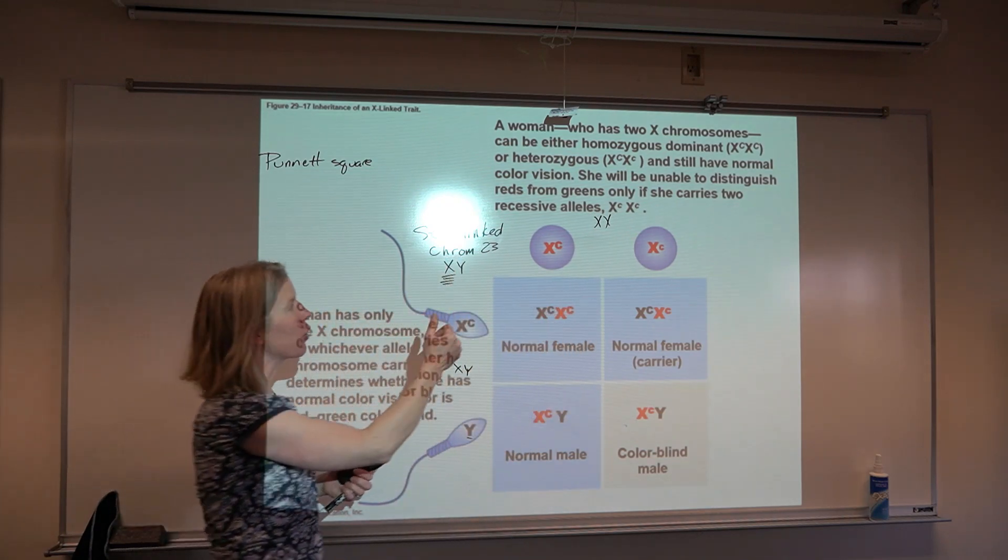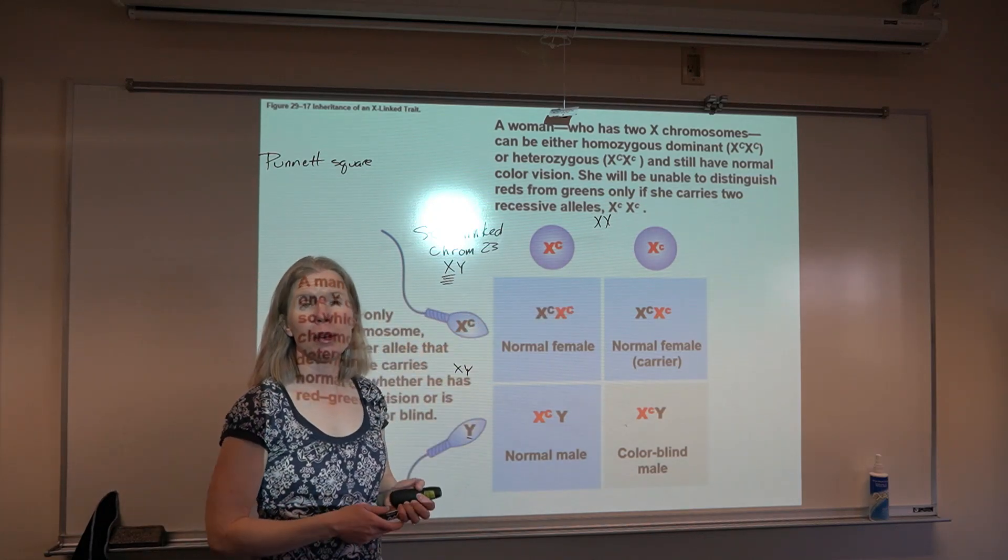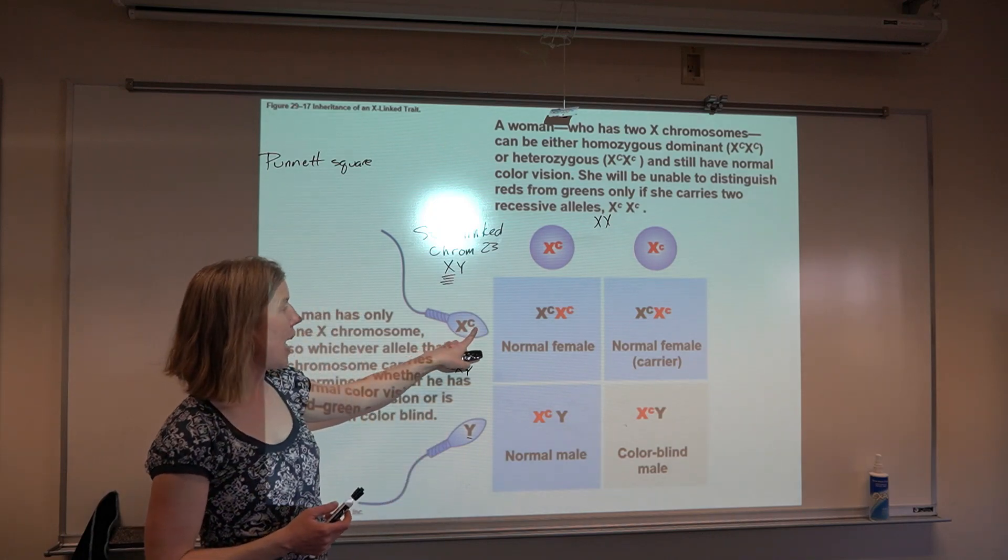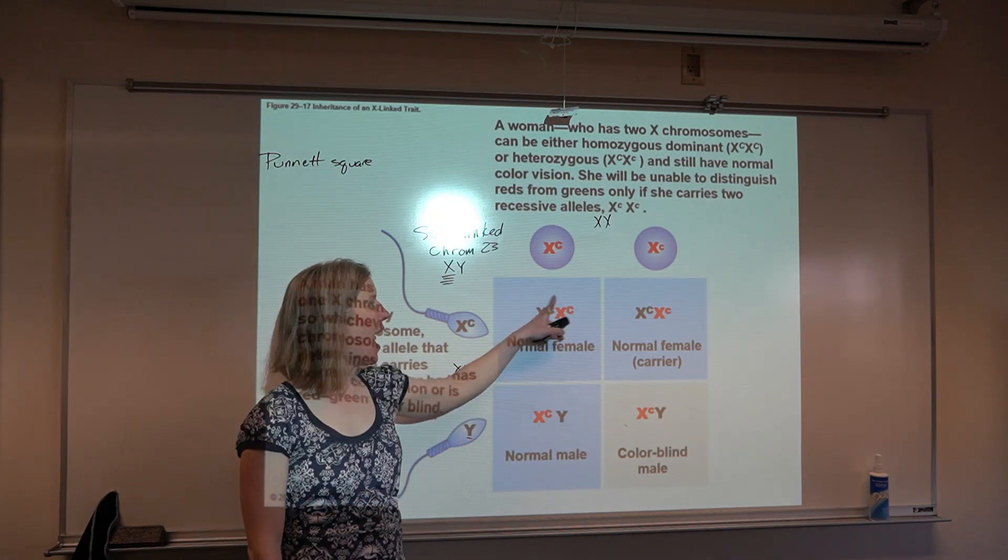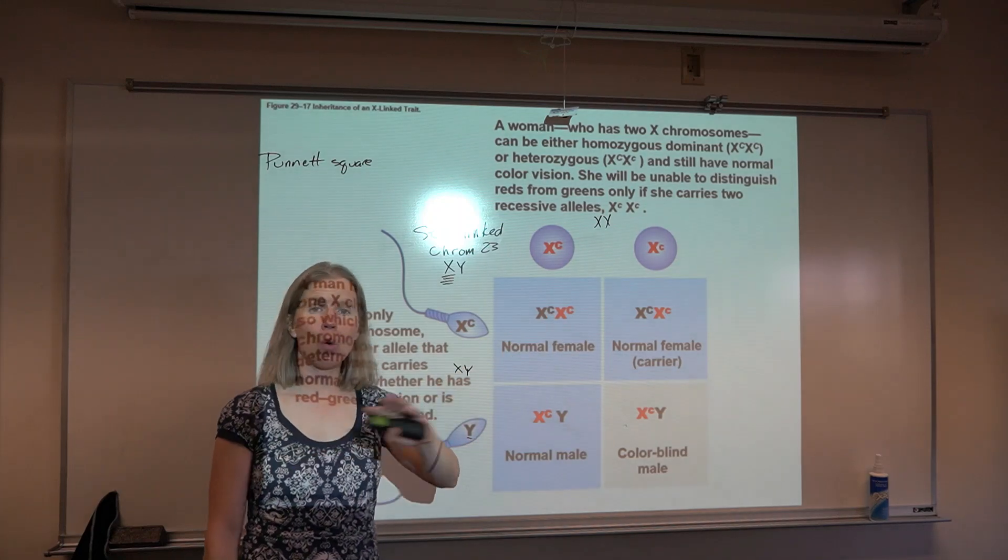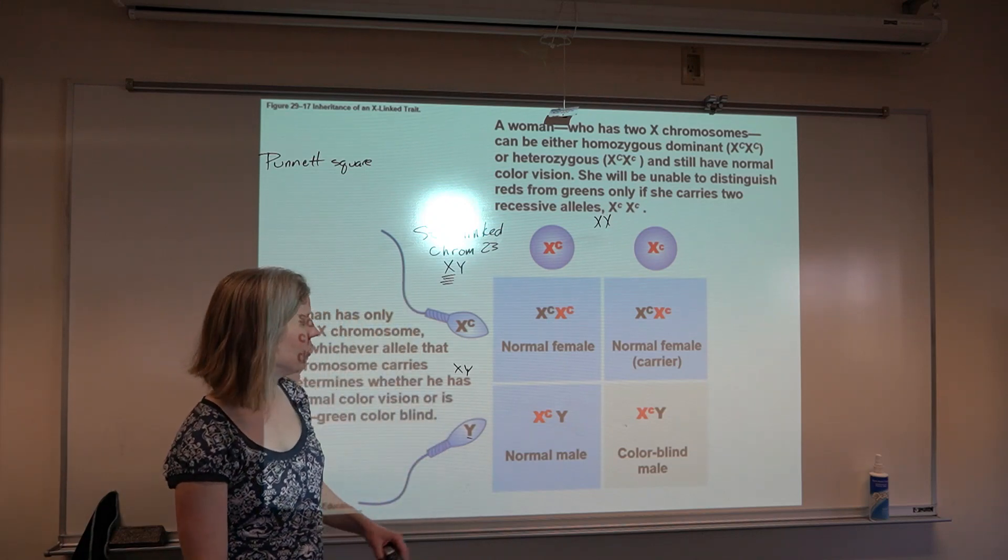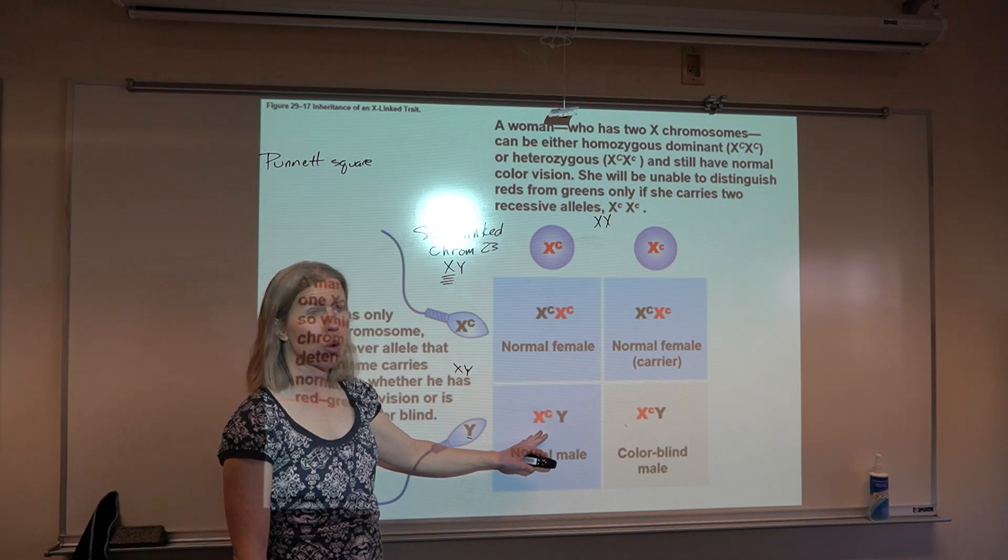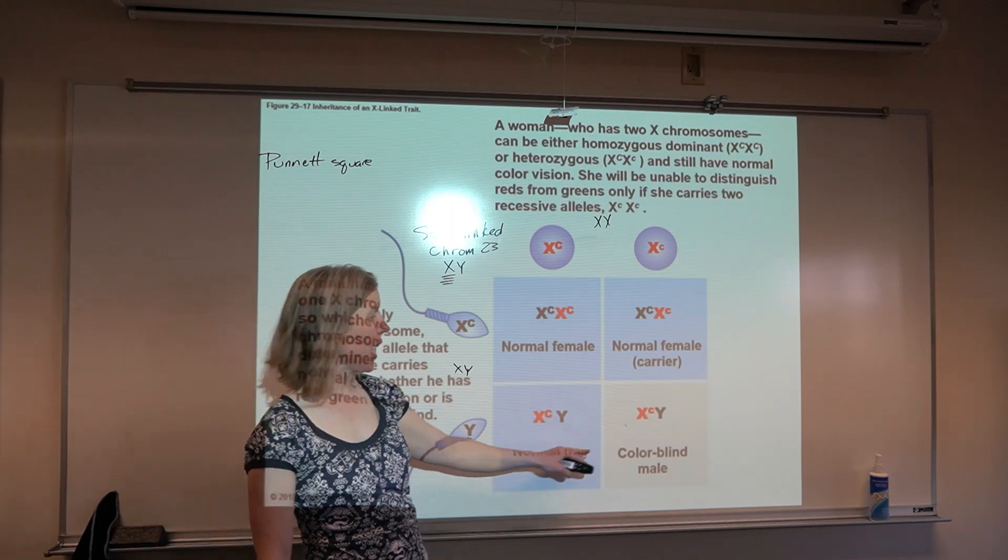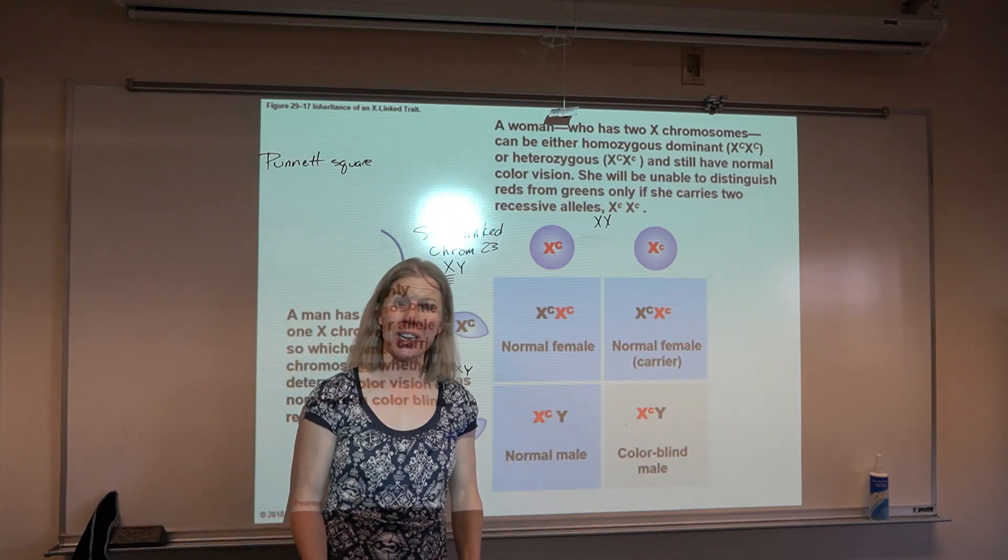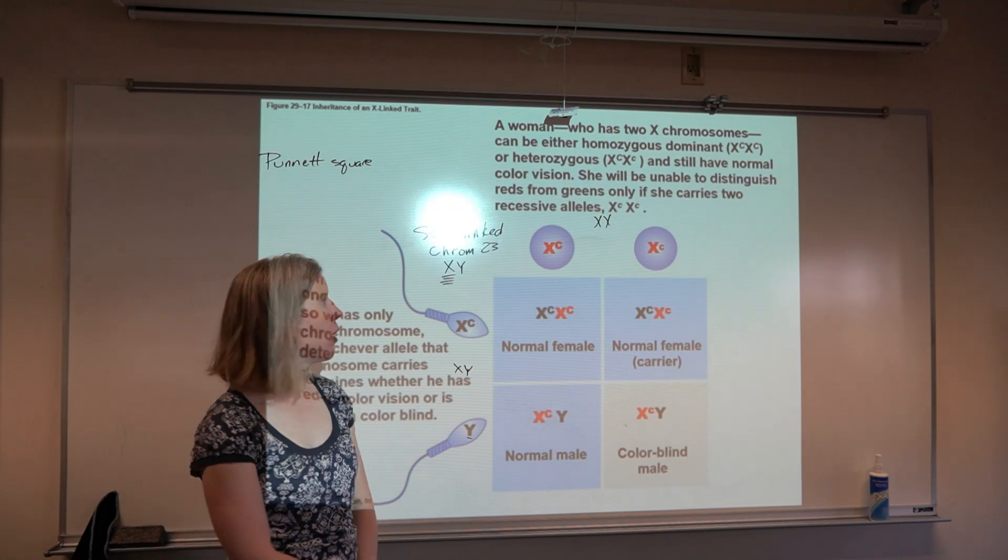What they're showing you here is the two possible ova. This one has a capital C. This woman is a carrier for colorblindness, so a lowercase c. Dad has normal color vision. So all daughters are going to have normal color vision. Half the daughters get two big Cs, totally normal, not carrying, inheriting that trait. Half the daughters then will be a carrier, but also have normal vision. Half the males get normal vision because they inherited the dominant normal vision allele from mom, Y chromosome from dad, and then half of the boys will be colorblind. So sex-linked inheritance works a little differently, but there are some important diseases that work this way as well.